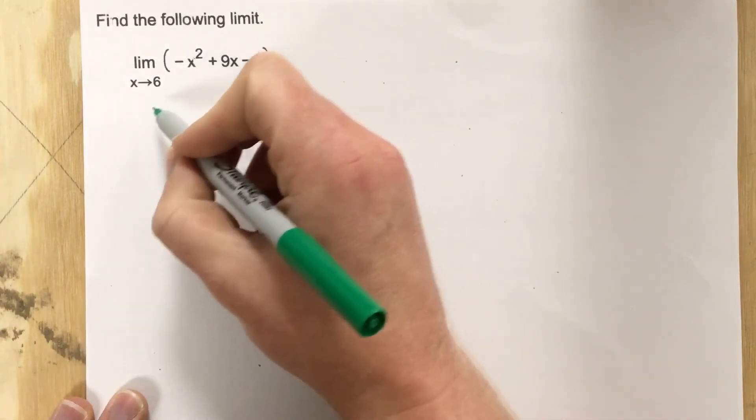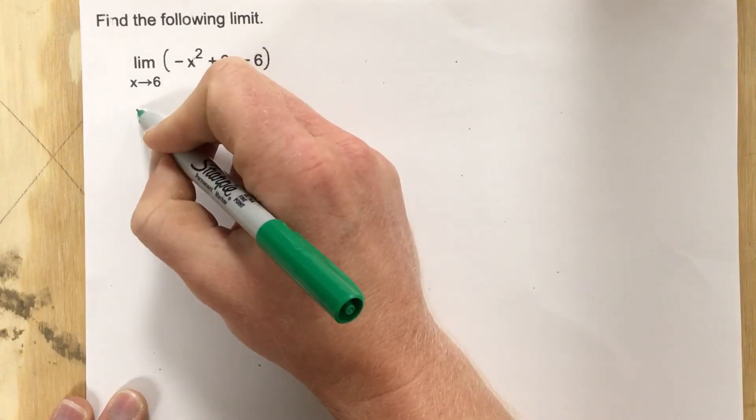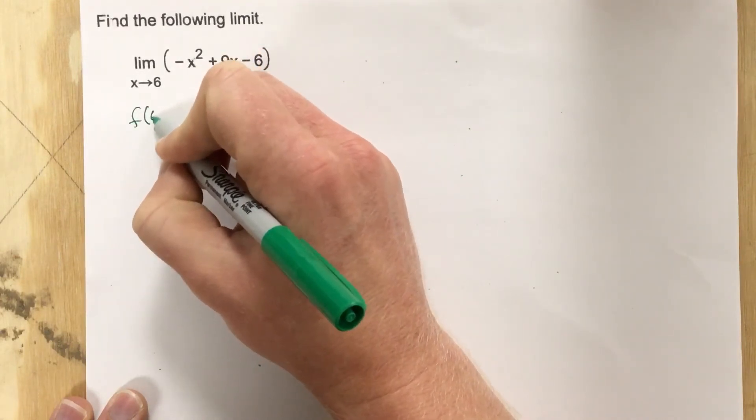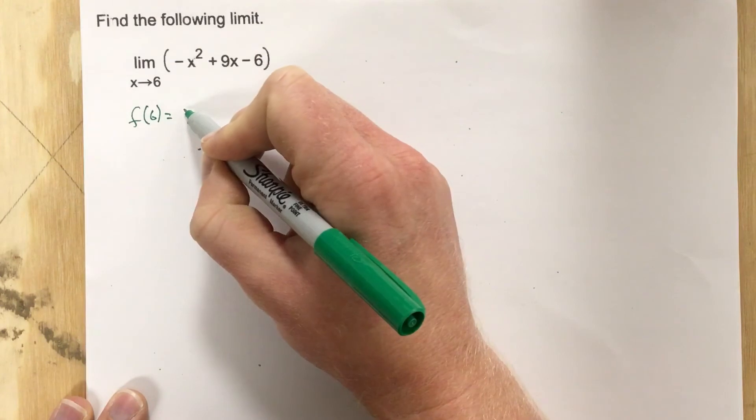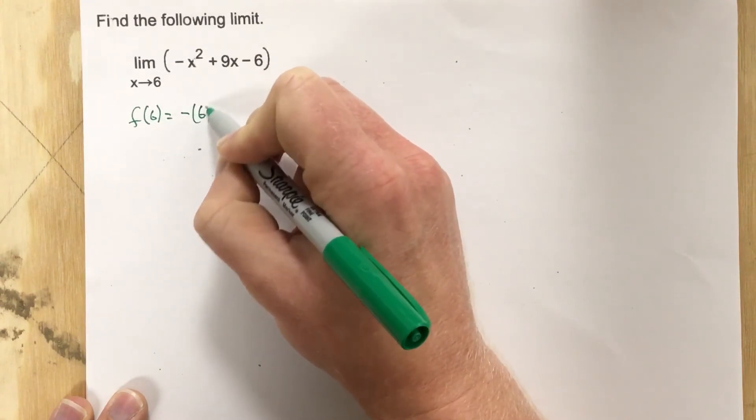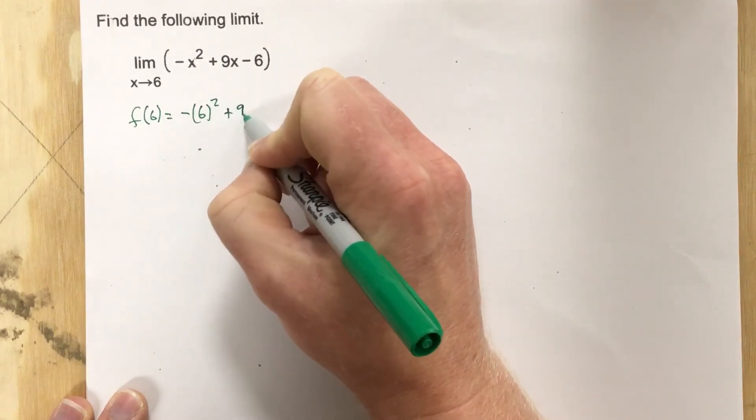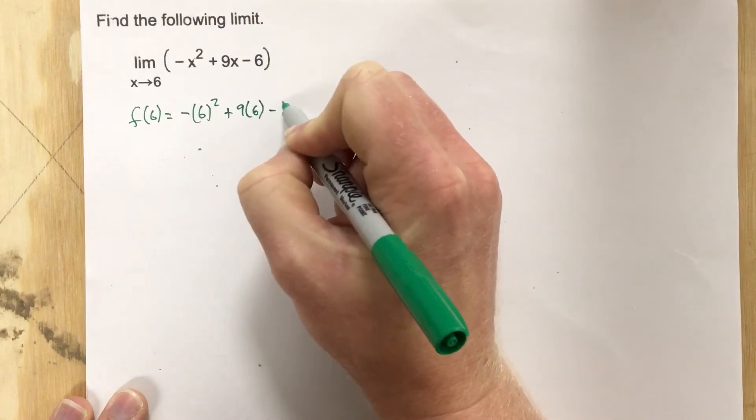And so the first step we're going to do is we're going to say, all right, we're going to take the function with an input of six and we get negative six squared plus nine times six minus six.